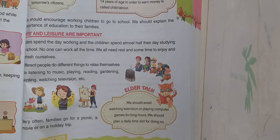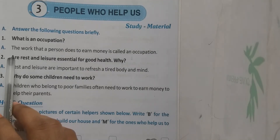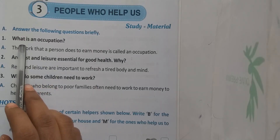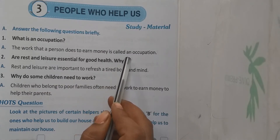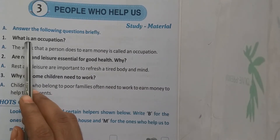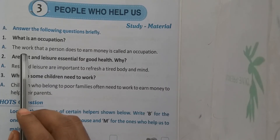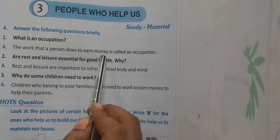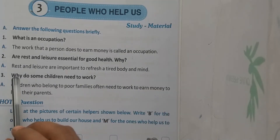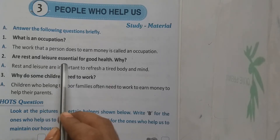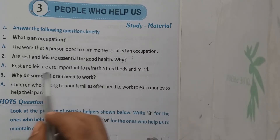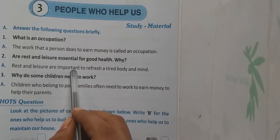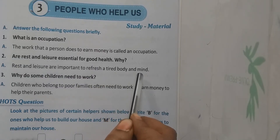Have you understood this lesson? Now I will ask a few questions. What is an occupation? The work that a person does to earn money is called an occupation. Are rest and leisure essential for good health? Yes — rest and leisure are important to refresh a tired body and mind.